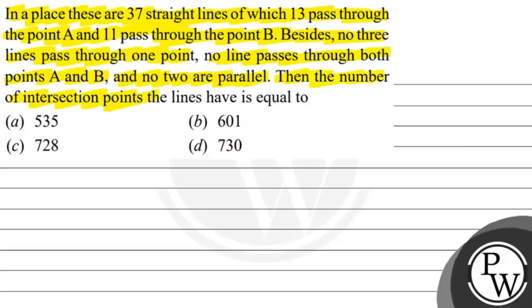Then, the number of intersection points the lines have is equal to option A, 535, option B, 601, option C, 728, option D, 730.